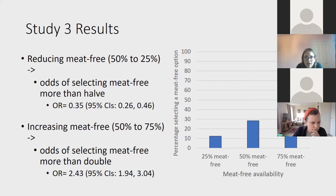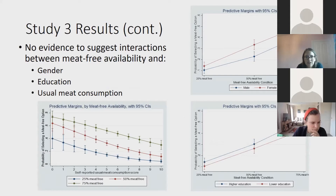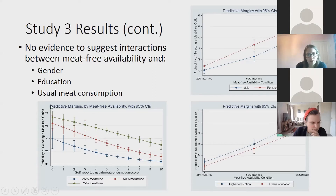We found quite a strong effect of availability. Reducing meat-free options from 50% to 25% more than halved the odds of selecting a meat-free option, whereas increasing the meat-free option from 50% to 75% more than doubled the odds of selecting a meat-free option. Regarding differential effects by demographic characteristics, there was no evidence of interactions between meat-free availability by gender, education, and usual meat consumption. Being female, having higher education, or eating less meat were each associated with being more likely to choose meat-free, but these didn't have any interactive effects with availability.